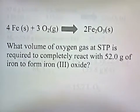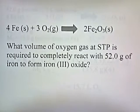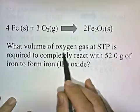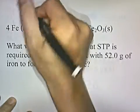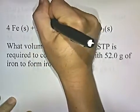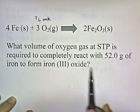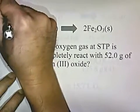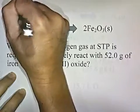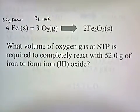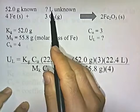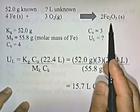Let's try this problem: what volume of oxygen gas at standard temperature and pressure is required to completely react with 52 grams of iron to form iron(III) oxide? They're asking for liters of oxygen — that's the unknown. They tell you you have 52 grams of iron — that's the known.